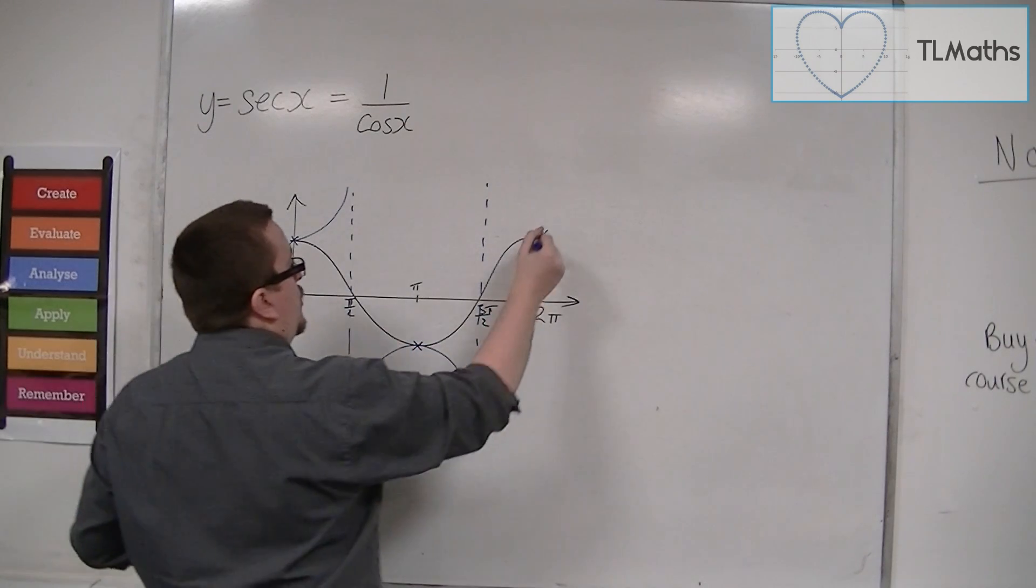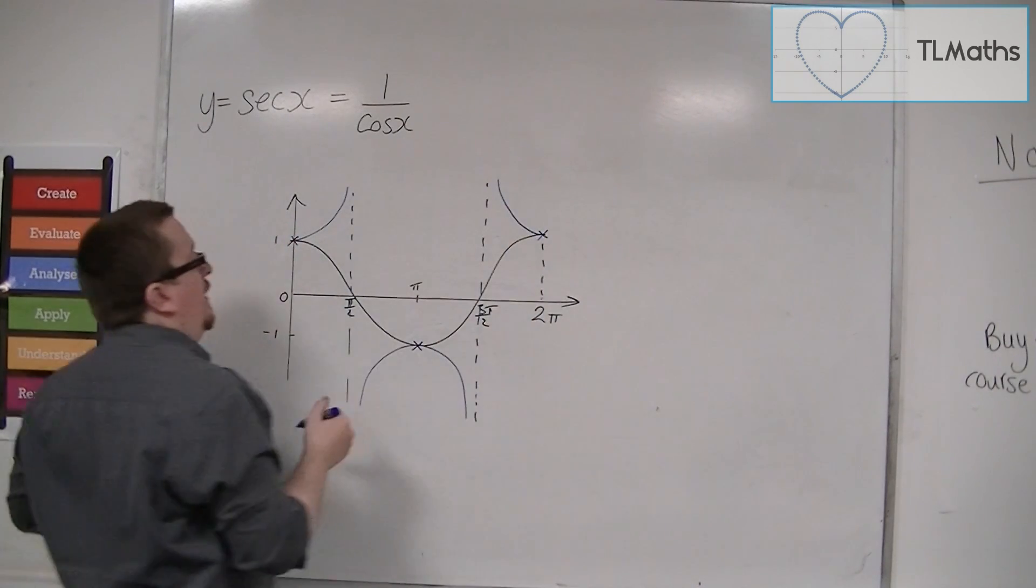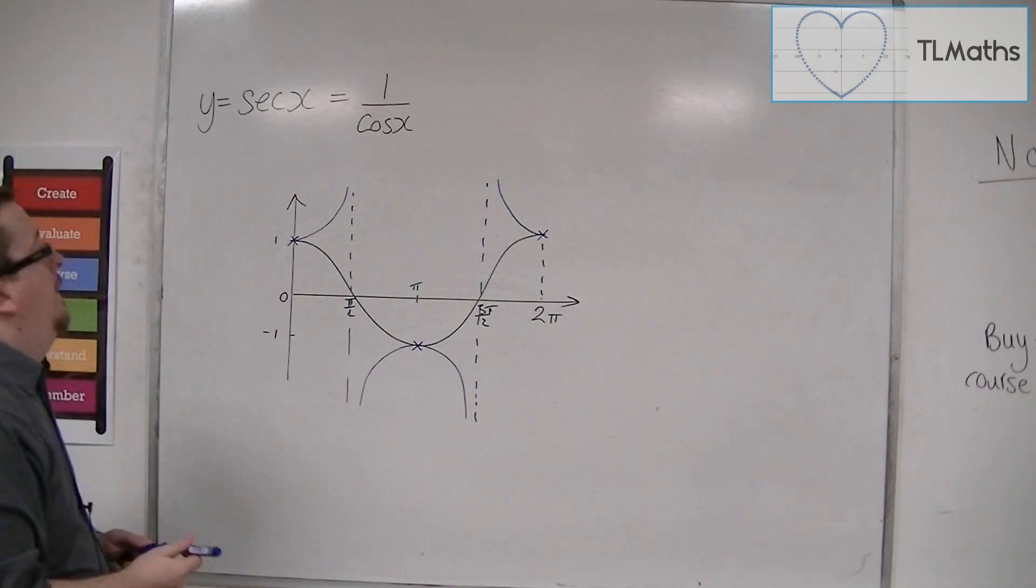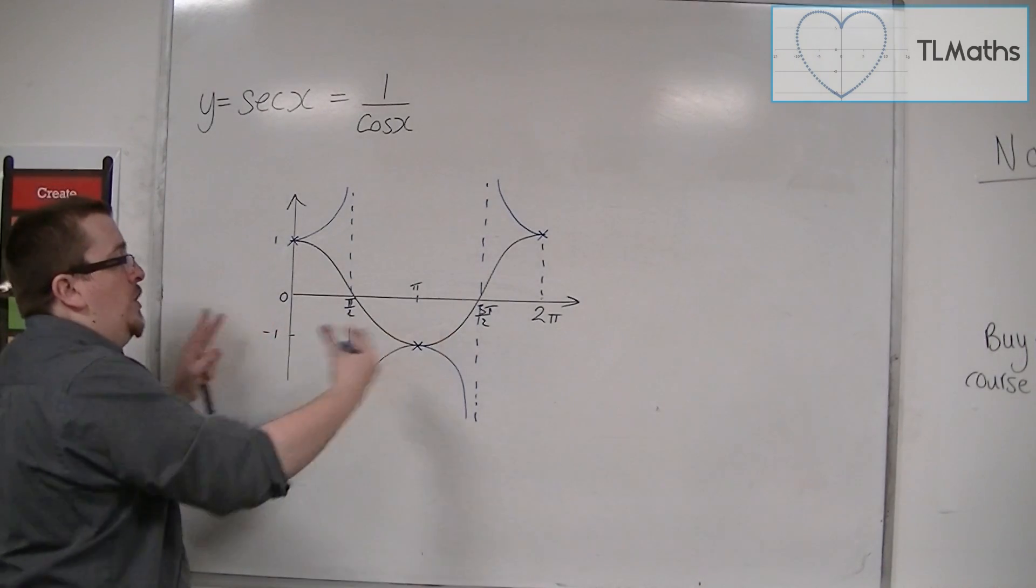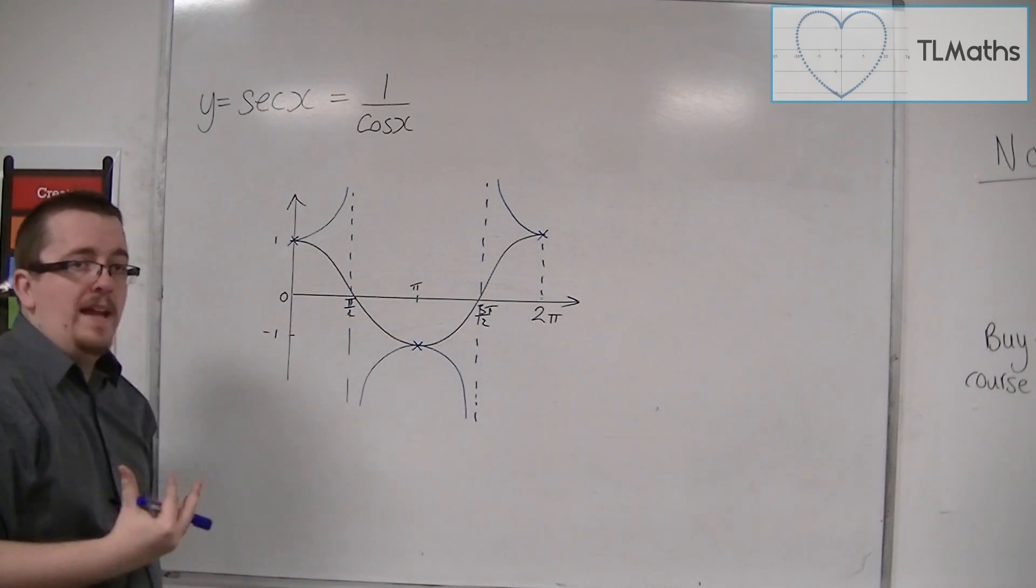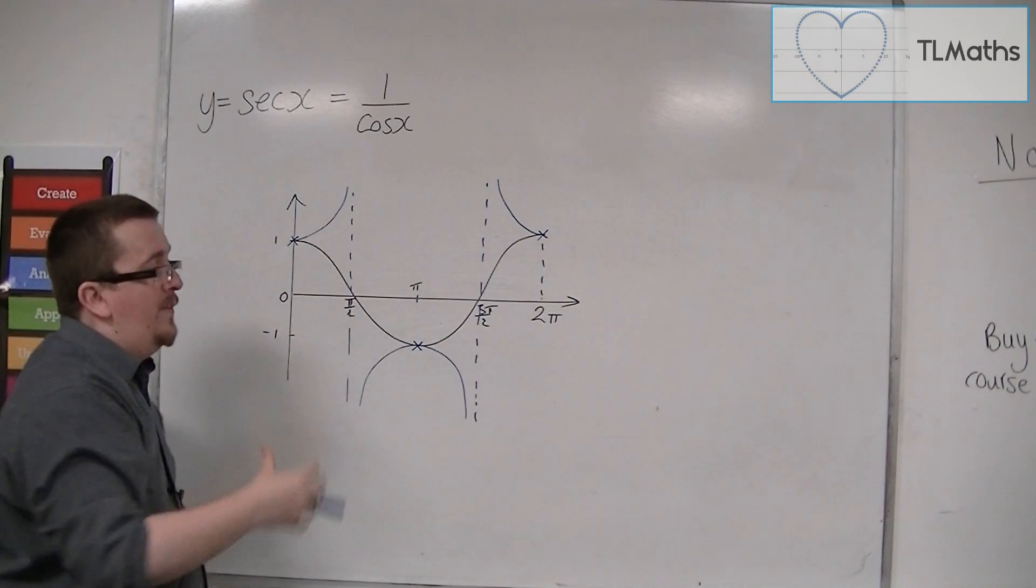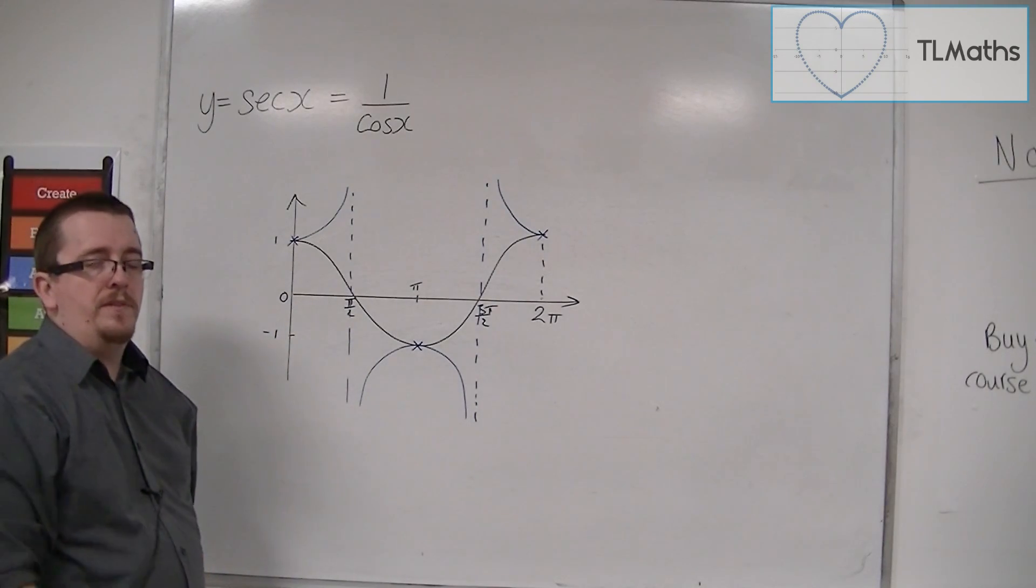So it's a translation of cosec, like cosine is a translation of sine. So it's been shifted along the x-axis. Well, you can see it that way or that way. So compare this with the previous graph in the previous video.